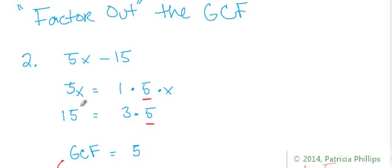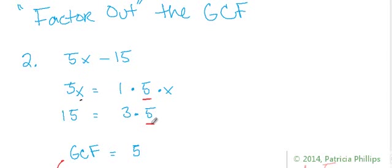We'll start with 5x. 5x equals 1 times 5 times x. Notice the coefficient only factors down to 1 times itself — 5 is a prime number. Those are its only factors. Now let's get the factors of 15. 15 equals 3 times 5. You can't factor it further because 3 and 5 are both prime numbers.